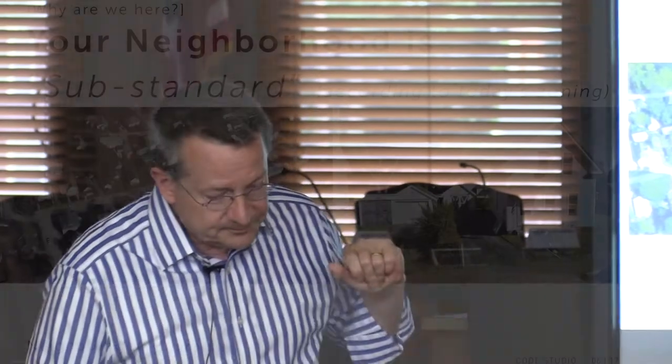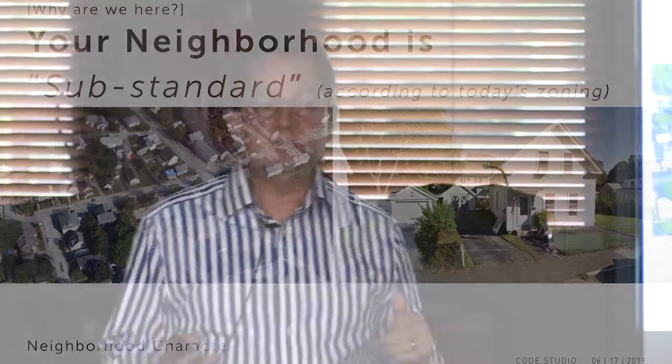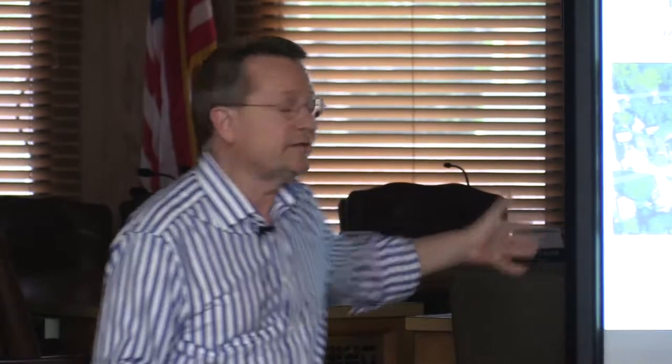Right now, pretty much everybody's neighborhood zoning says they are substandard or nonconforming. We did an analysis throughout the community — you can find the assessment on the project website — that looked at specific neighborhoods. Basically, in lots and lots of places, stuff is too close to the lot line, the lot size is too small, it's too narrow, and it would be deemed nonconforming by today's ordinance. Even though we like the character of these areas and the houses and neighborhoods are fine, the zoning says they're not fine. So this is one of the things we're hoping to cure.